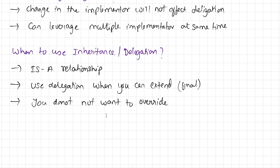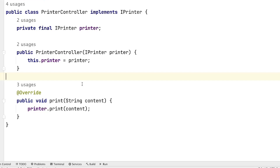Now, when should you use inheritance versus delegation? If you want to establish an 'is-a' relationship between classes, you can always use inheritance, as it is perfect for that. However, if your parent class is final and you cannot extend it, you should use delegation instead. Also, if a class has multiple behaviors but you do not want to expose all of them, you can use delegation. Overall, delegation makes our code modular — it is easy to test, easy to maintain, easy to understand, and it helps in changing behavior at runtime. If a behavior already exists in the system, you can reuse it using delegation without writing it from scratch.